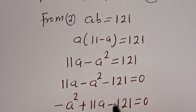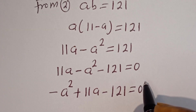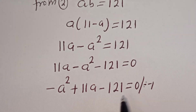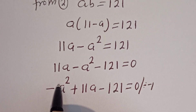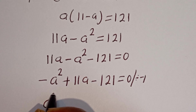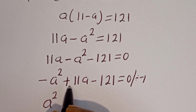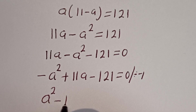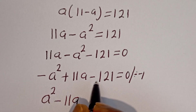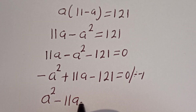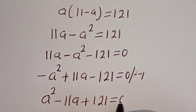Now we can divide all terms by minus 1. Minus A squared divided by minus 1 is A squared, plus 11A divided by minus 1 is minus 11A, and minus 121 divided by minus 1 is plus 121, all equal to 0.